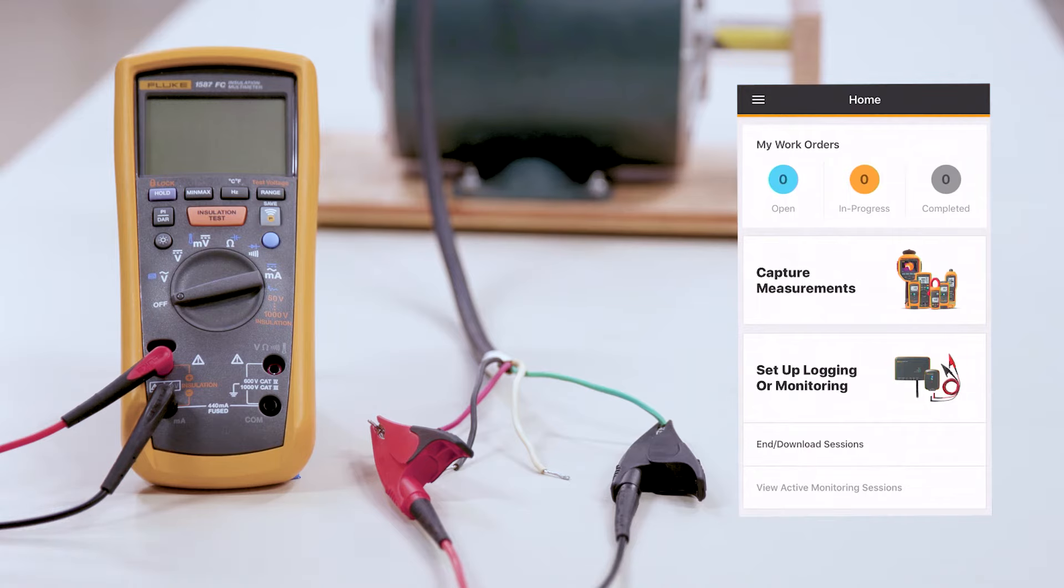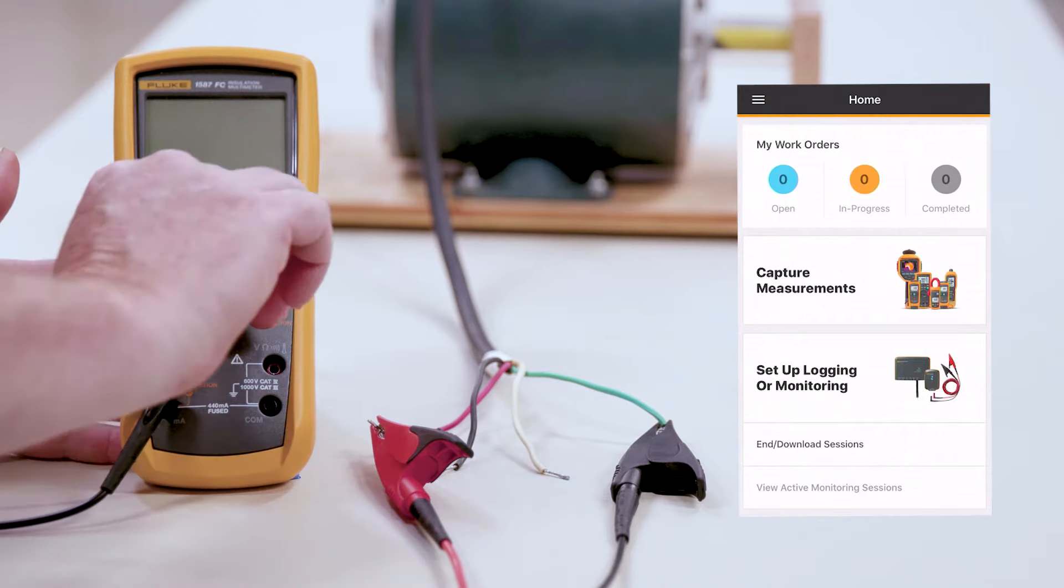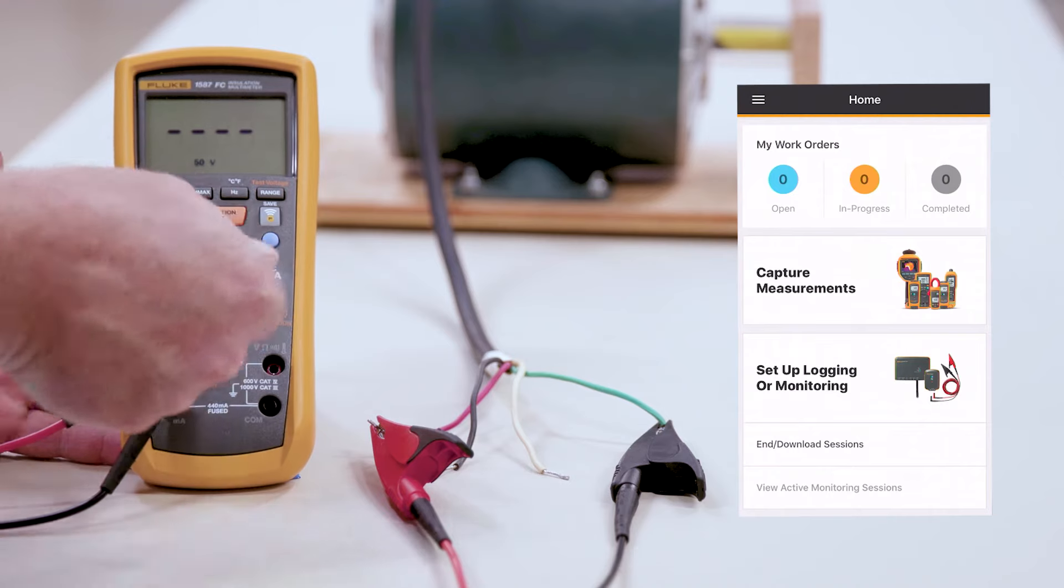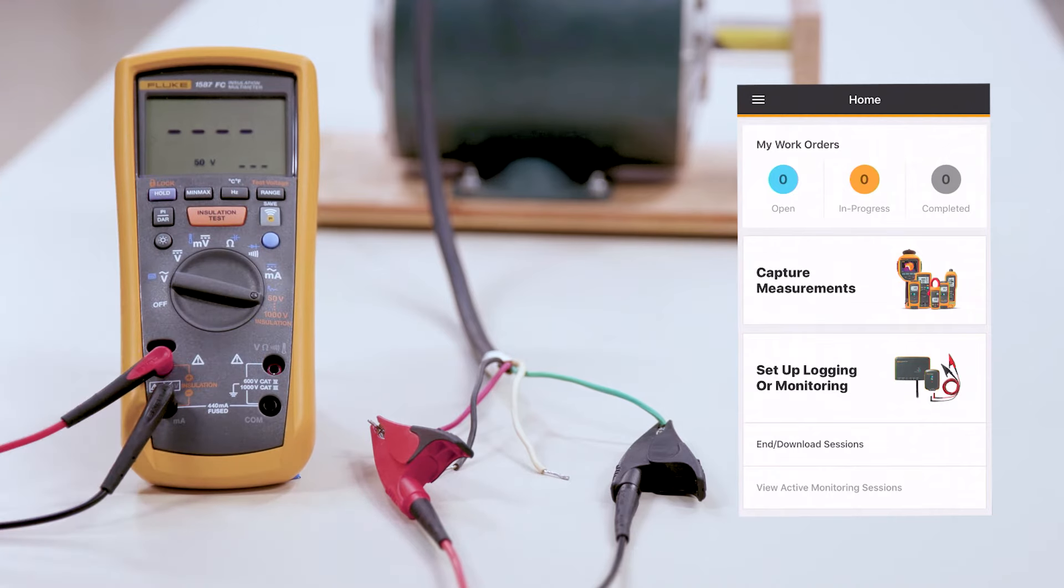At this point here, we want to go ahead and turn the meter on all the way over to the far right in the orange for our insulation test.